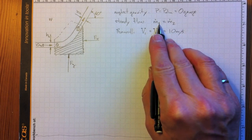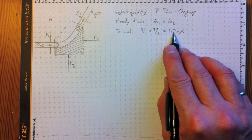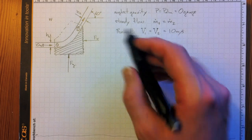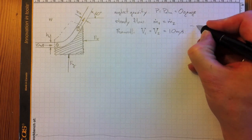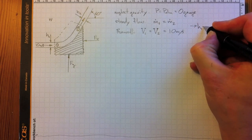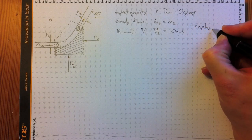So those are both 10 meters per second. If m.1 is equal to m.2, and the velocities are the same, and the densities are the same, then the cross-sectional areas must be the same. Therefore, h.1 also equals h.2.